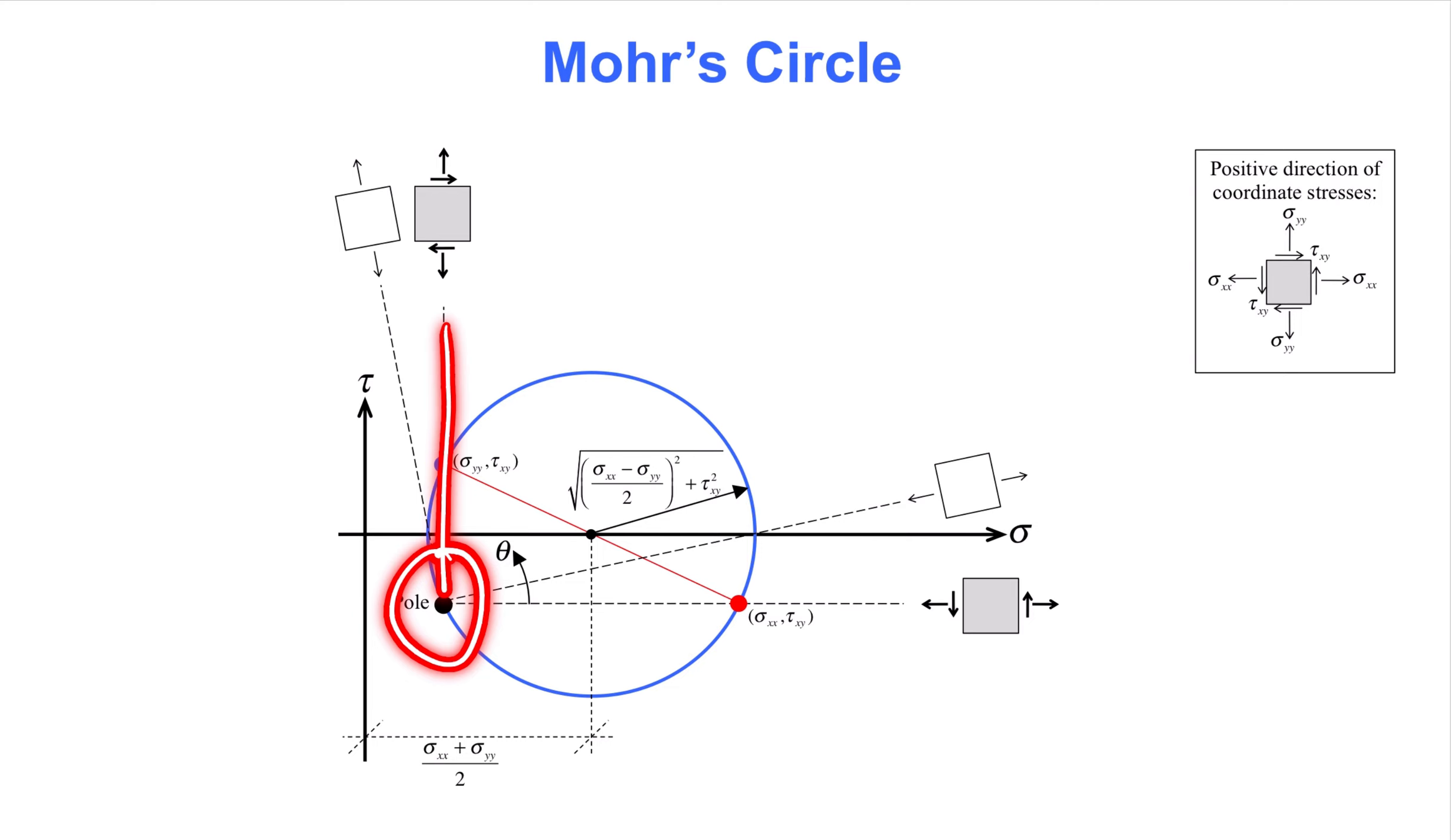From the pole point, draw lines in any direction. The point at which the line intersects the circle is a stress state with the following meaning. The orientation of the line is the orientation of the square on which stresses act. Pay attention only to the stress on the near and far edges of the square at the end of each line, as shown in the figure.